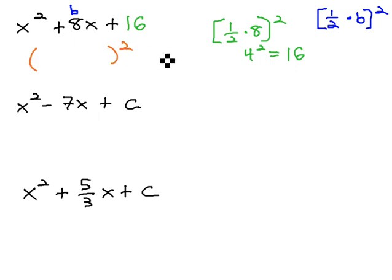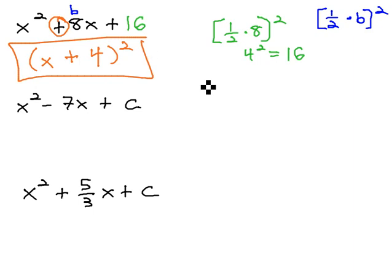Perfect squares are easily factored as the square root of the first term x, the sign from the middle plus, and the square root of 16 is 4. We now have x plus 4 squared.